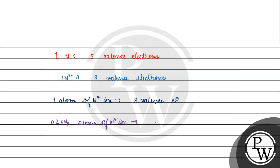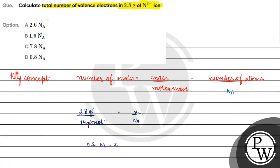So the total valence electrons will be 8 into 0.2 into Avogadro's number, which equals 1.6 into Avogadro's number valence electrons. The correct answer for this question is Option B. I hope you understood it well. Thank you and all the best.